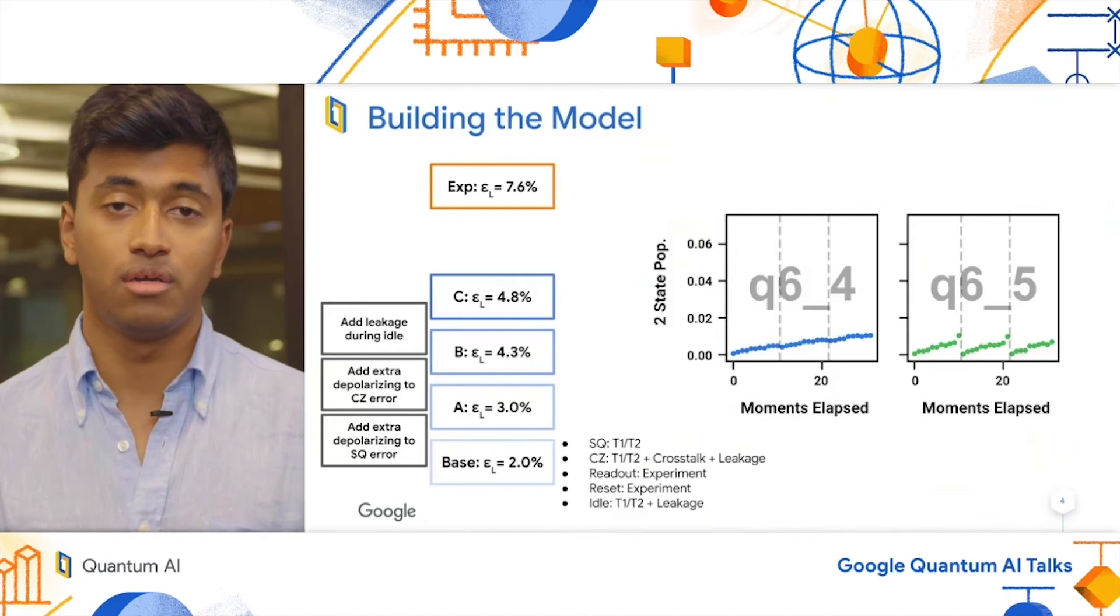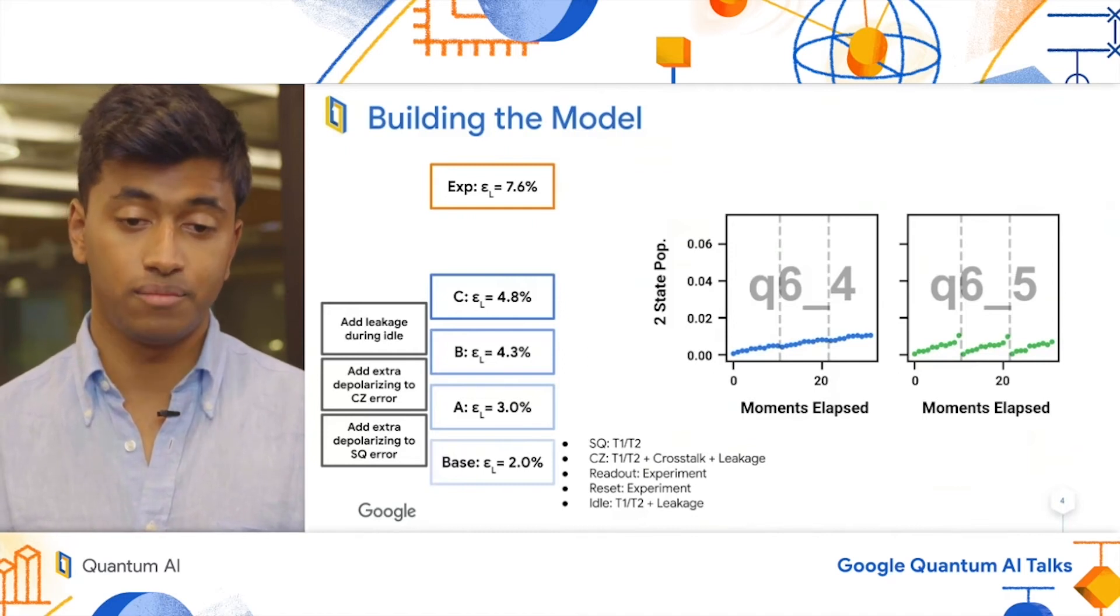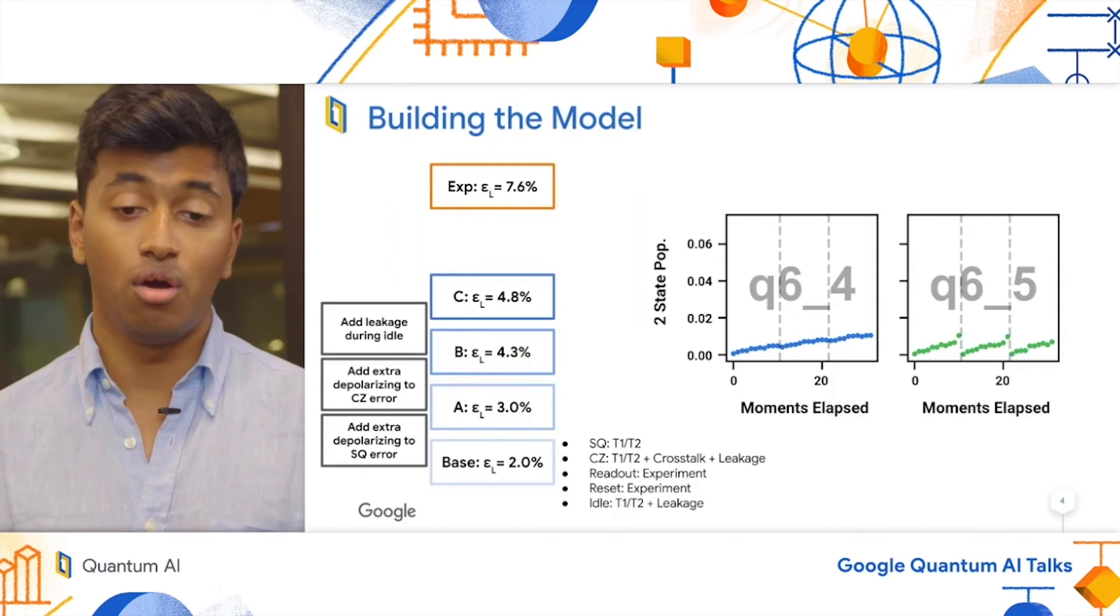On the left plot, we have a data qubit shown in blue. You can see the leakage builds up monotonically over the course of multiple rounds, indicated by the gray dotted lines.